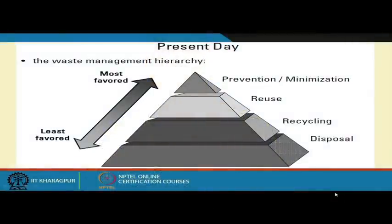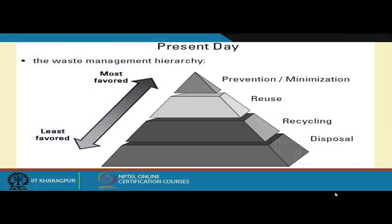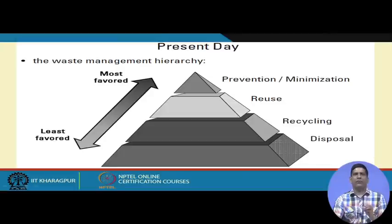Continuing from the previous module, we were talking about different ways of managing waste: reduce, reuse, recycle. This slide shows a typical waste hierarchy that you will find in any waste management rules throughout the world. It tells us that we should try to prevent garbage, and on the left you can see 'most favored' and 'least favored.' As we go toward the top, that is what most rules favor.